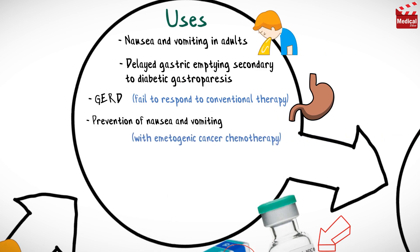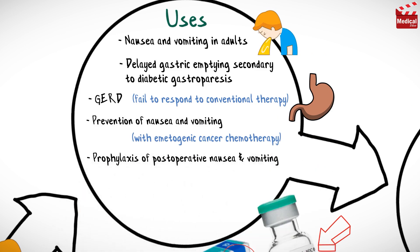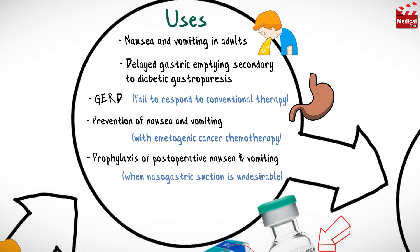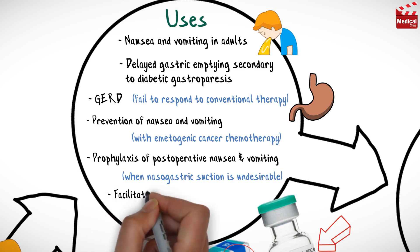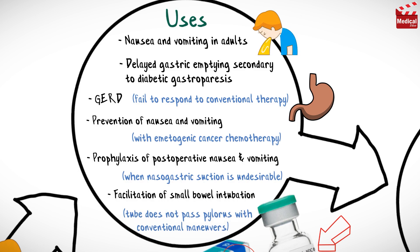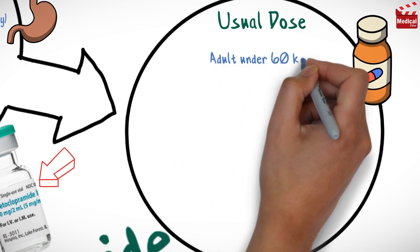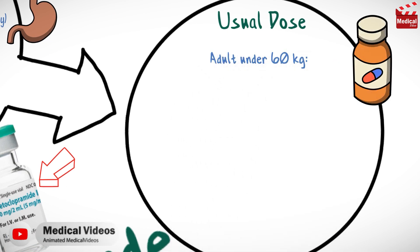It is also used in the prevention of nausea and vomiting associated with emetogenic cancer chemotherapy, prophylaxis of post-operative nausea and vomiting when nasogastric suction is undesirable, and facilitation of small bowel intubation when the tube does not pass the pylorus with conventional maneuvers.